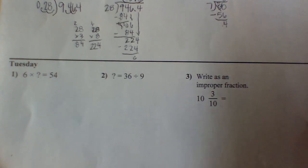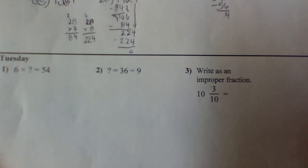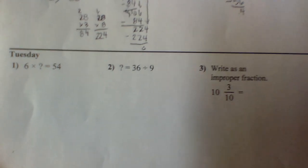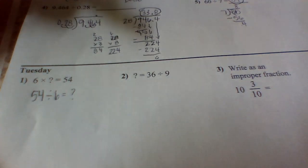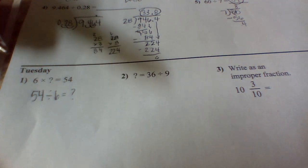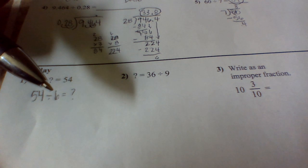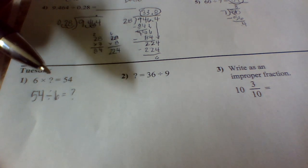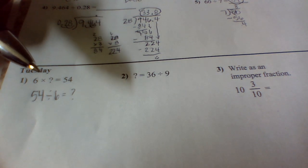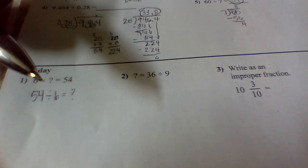So our very first one, we have 6 times some number equals 54. This is more just a fact, and we're going to use our inverse. So I'm going to rewrite that problem as 54 divided by 6. That gives me a good idea because that's a basic fact. I also get a good idea that it's going to be pretty close to 10. Because if I did 6 times 10, that gives me 60. So I know it has to be very close. And since this is a whole number, my actual answer is going to be 9.